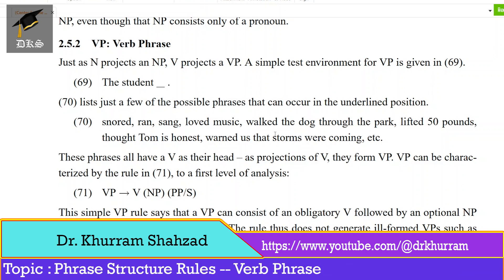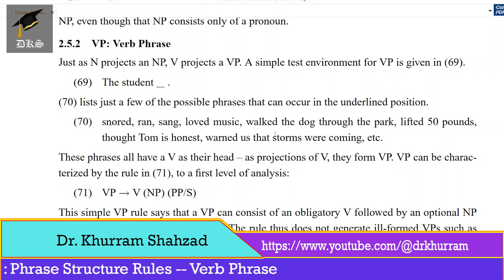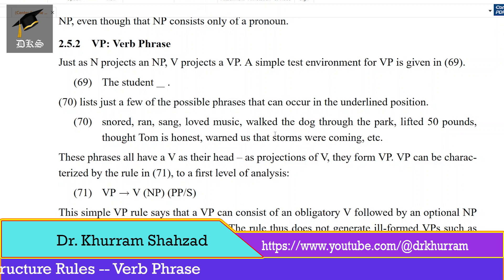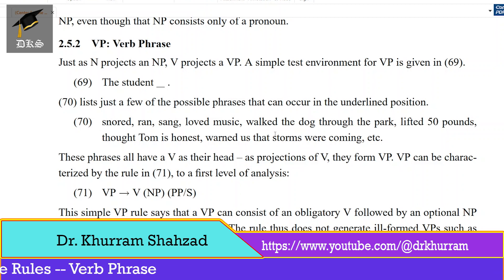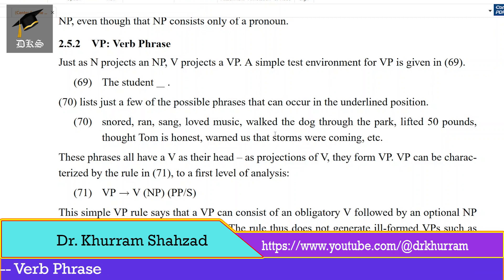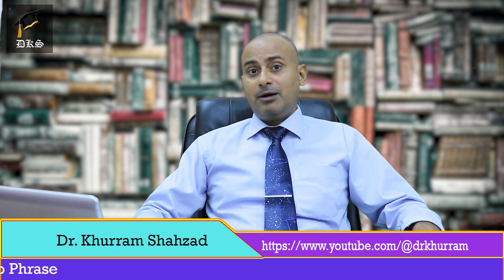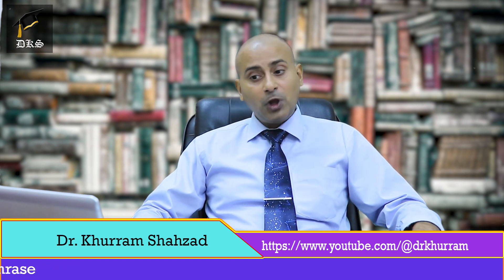Example 70 lists just a few of the possible phrases that can occur in the underlined position: 'The student snored. The student ran. The student sang. The student loved music. The student walked the dog through the park. The student lifted 50 pounds. The student thought Tom is honest. The student warned us that storms were coming.' So these are a limited number of phrases that can come in this empty slot.